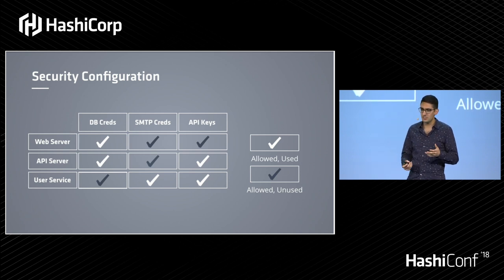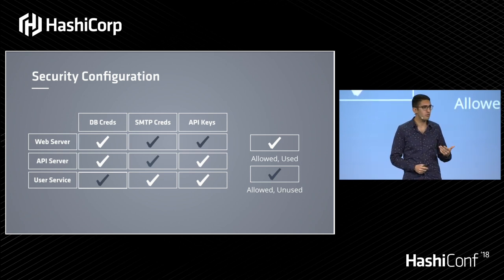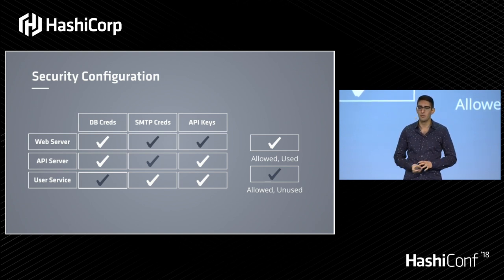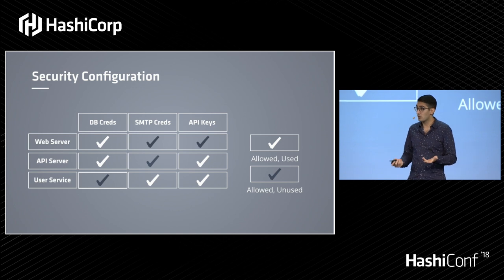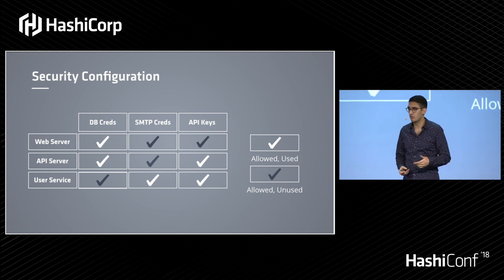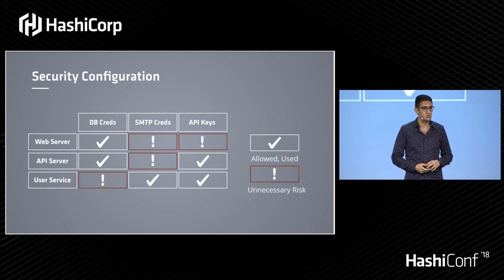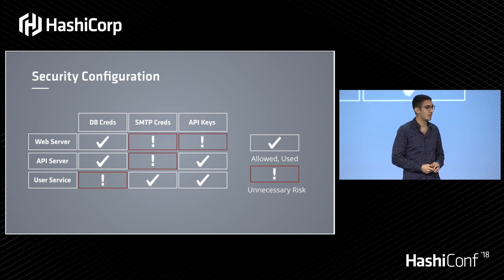Most of these systems are over-provisioned, and over time we never really remove permissions — we sort of keep adding things, so we get more and more over-provisioned. But 'if it ain't broke, don't fix it' tends to be the ruling mentality, so we kind of live with this. The challenge of living with this is what it represents: unnecessary risk.